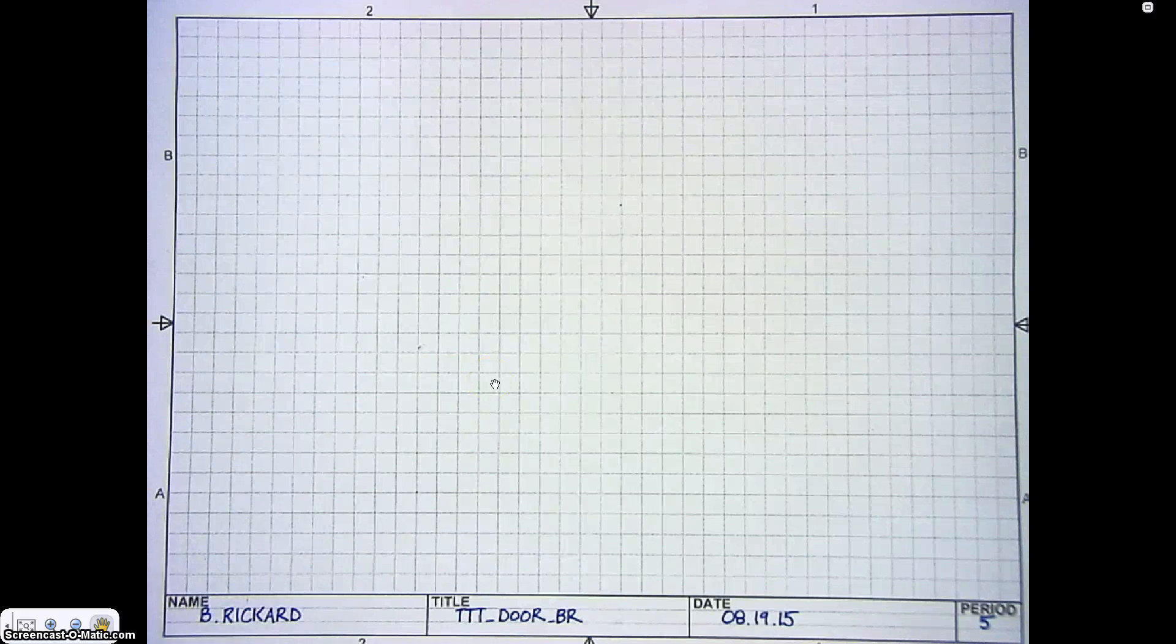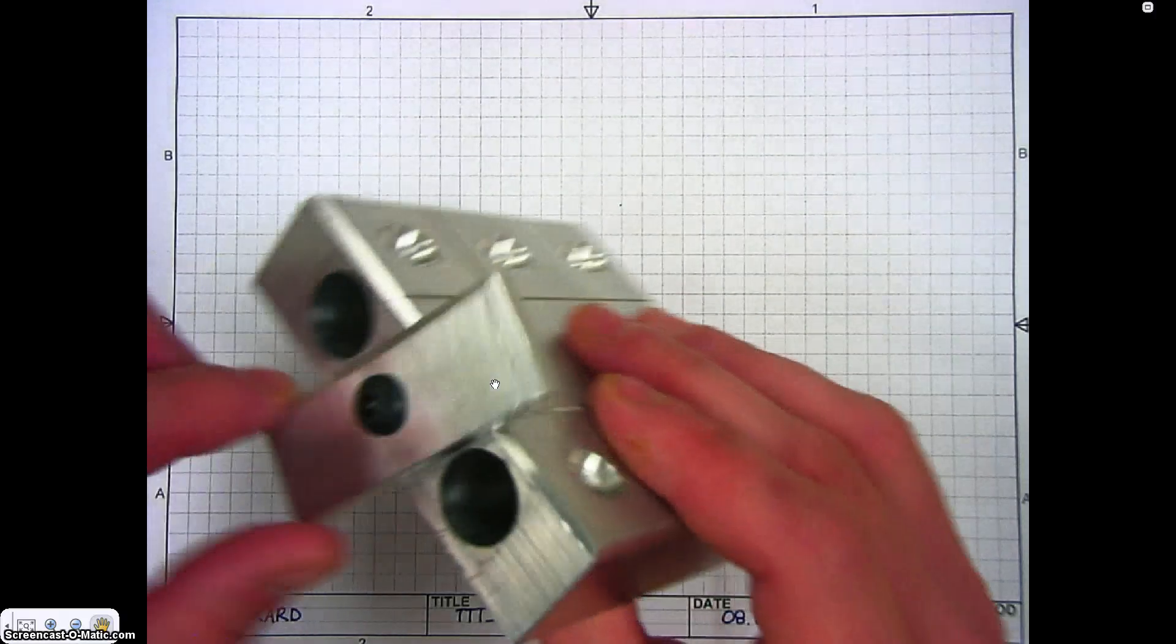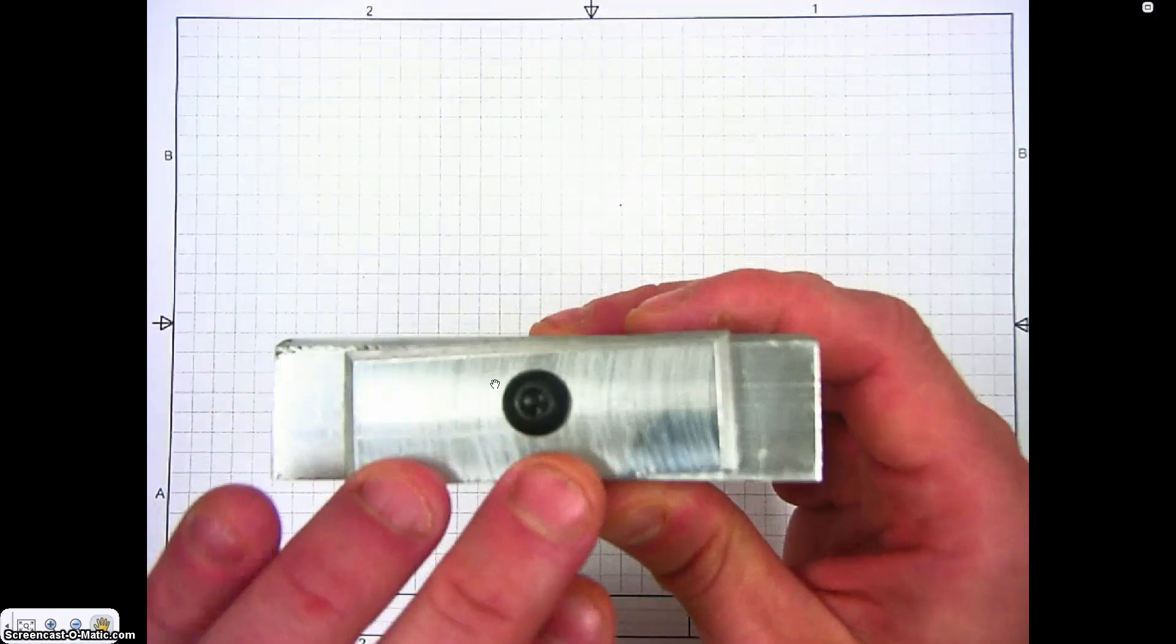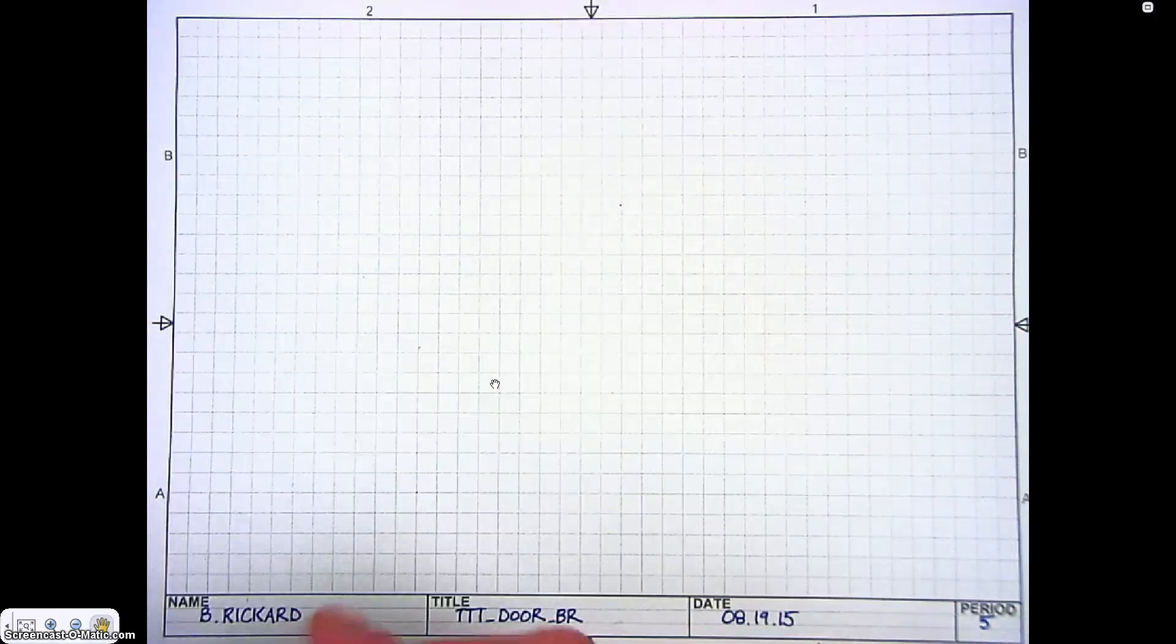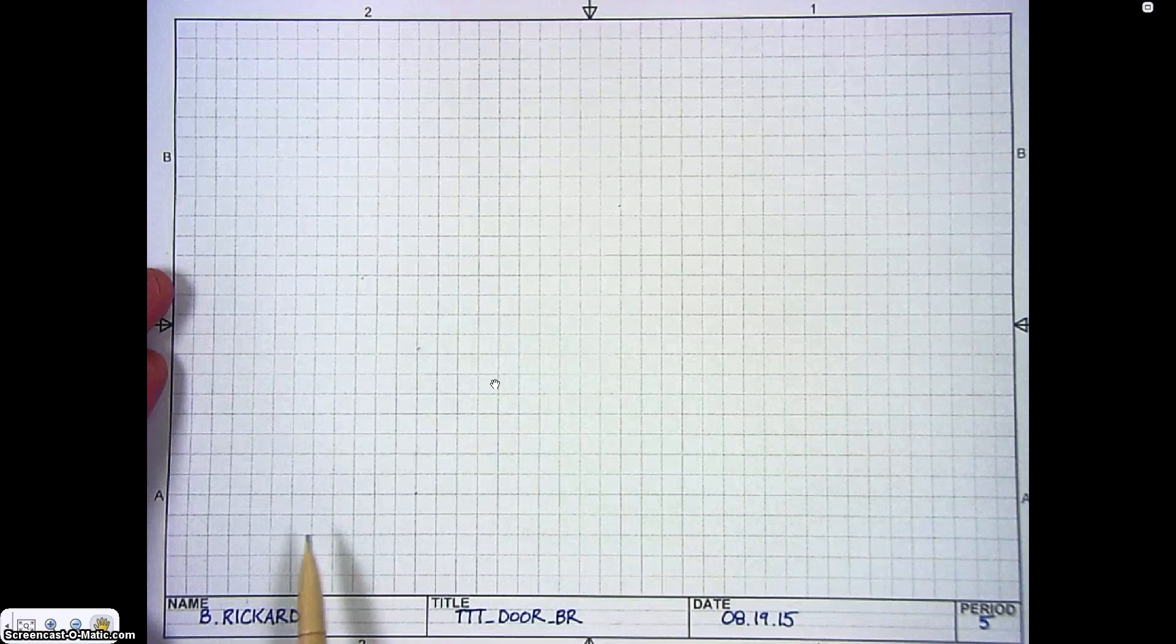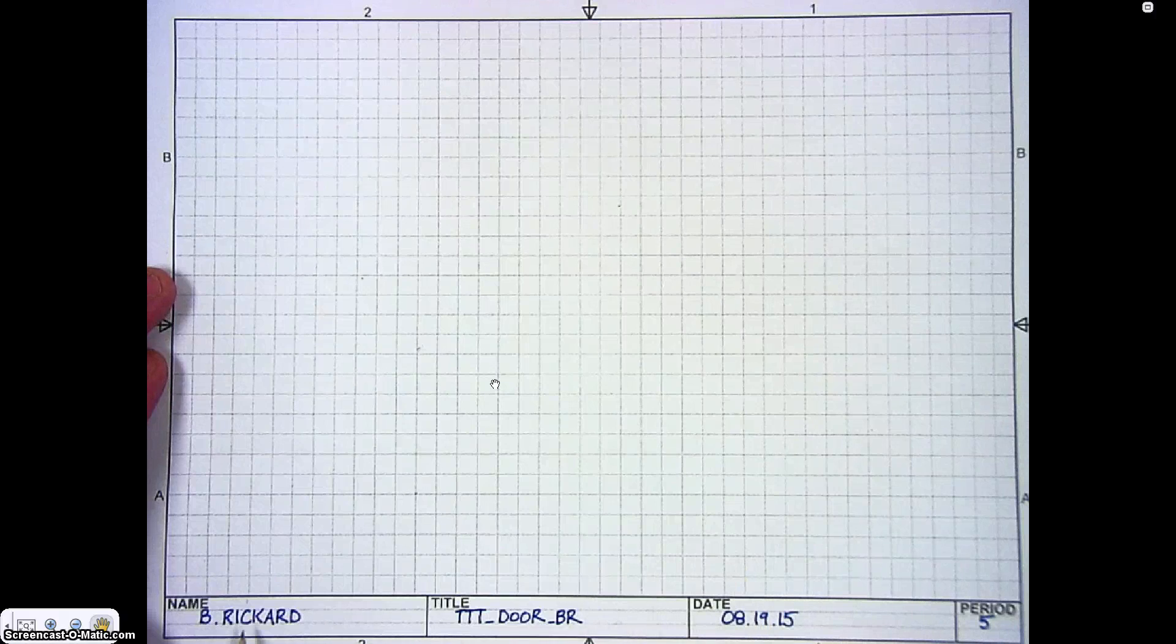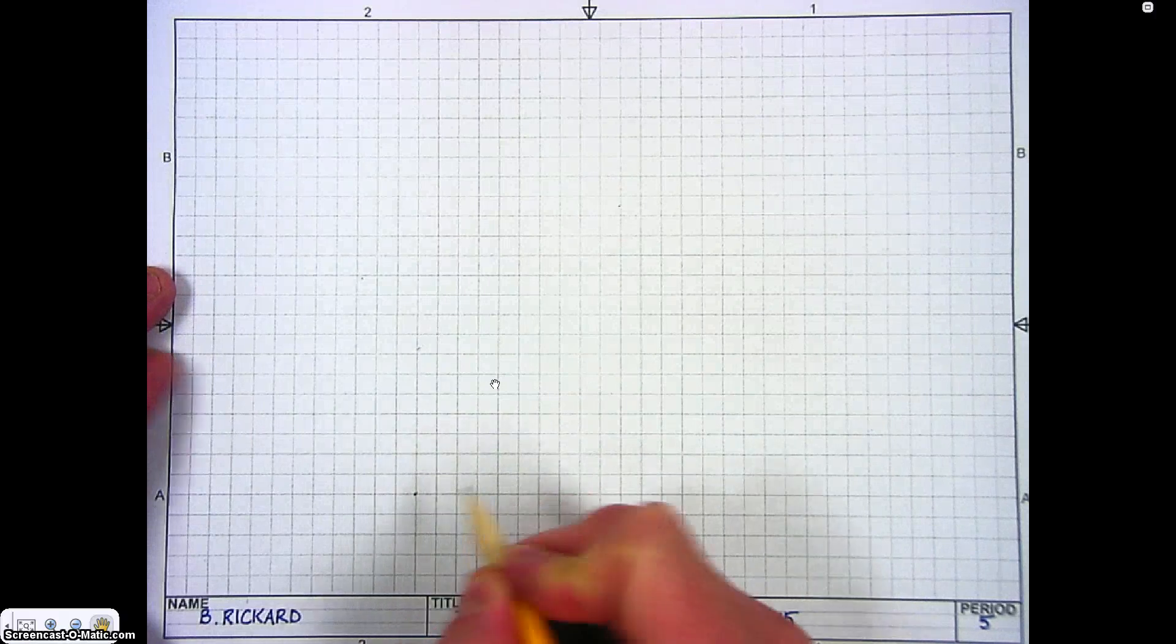All right, now we're going to work on creating an orthographic or multi-view drawing for this door piece. Remember, the door is the one that turns here. We're going to have to draw the different views of that as you see it. The first view we're going to draw is the front view. If you notice, I have orthographic paper, which is just like regular graph paper. Don't forget to fill out the title block information at the bottom, then find a point and we can start our drawing.